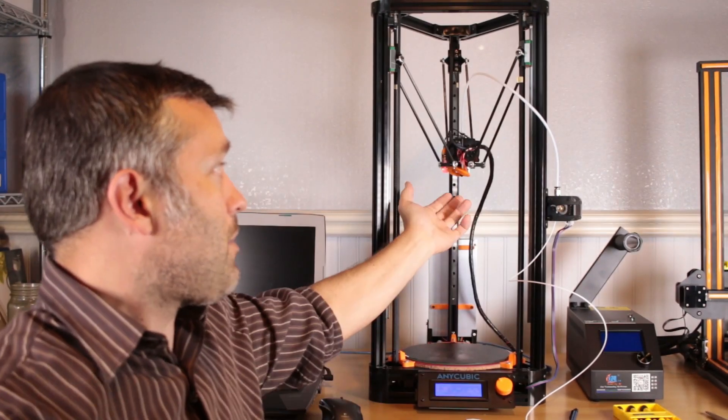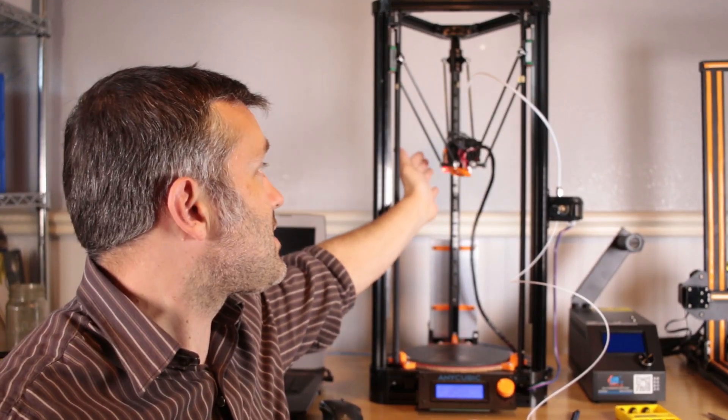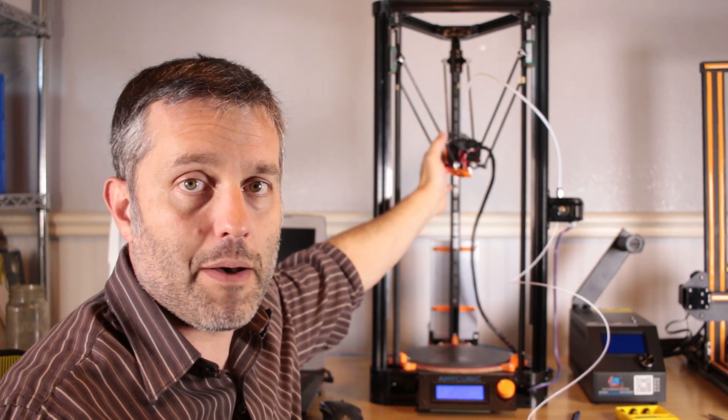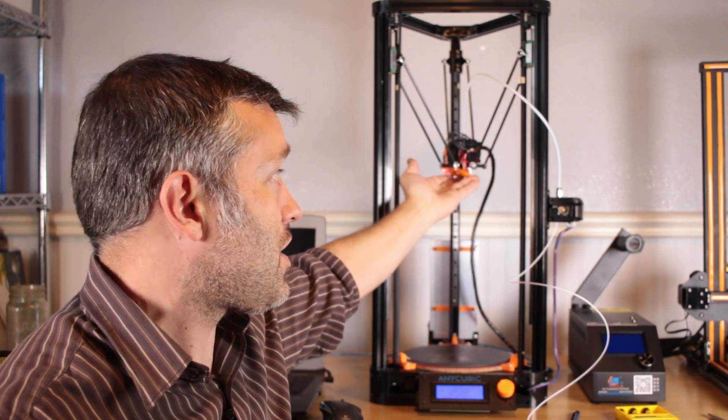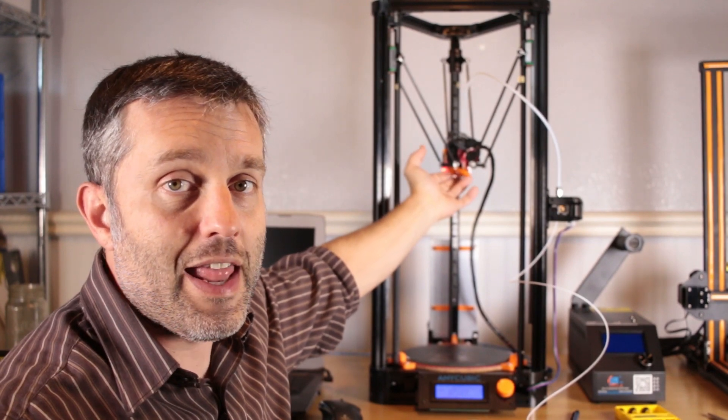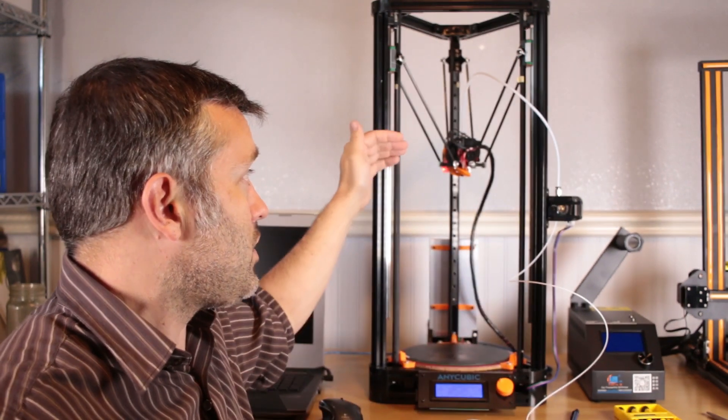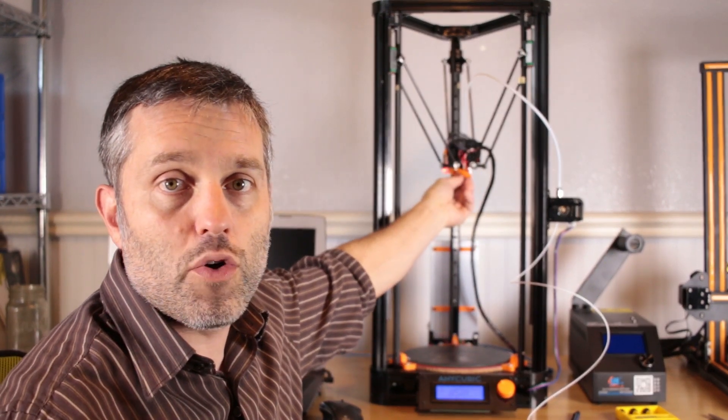This video is going to be about the part cooling fan shroud and the sensor mount for the BL touch mesh bed leveling sensor. The part cooling fan shroud is pretty intricate and it works really well because it cools the part from two sides and still gives you a nice clear view of the actual nozzle while it's printing.